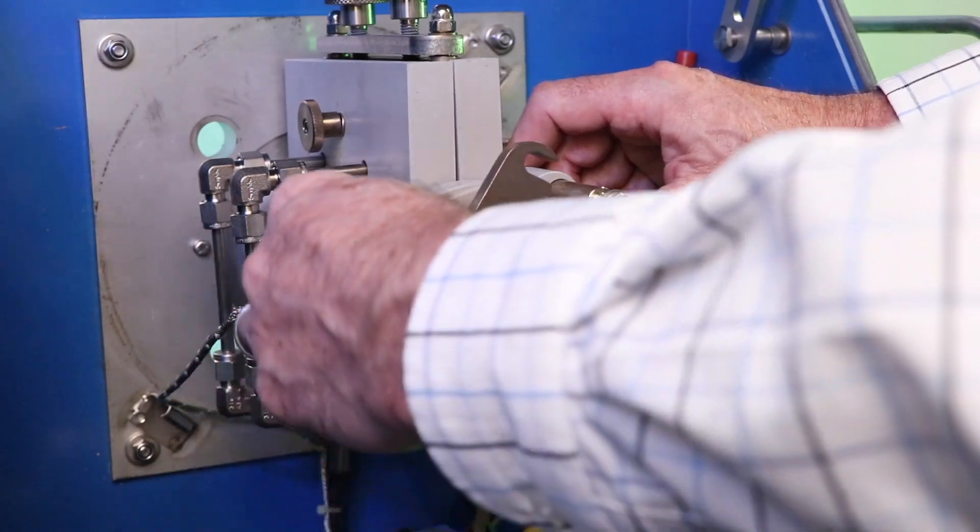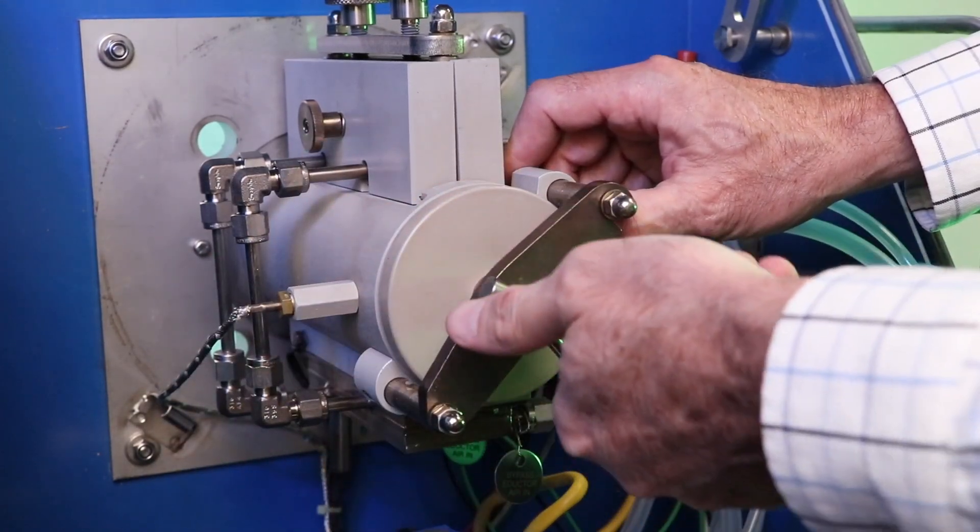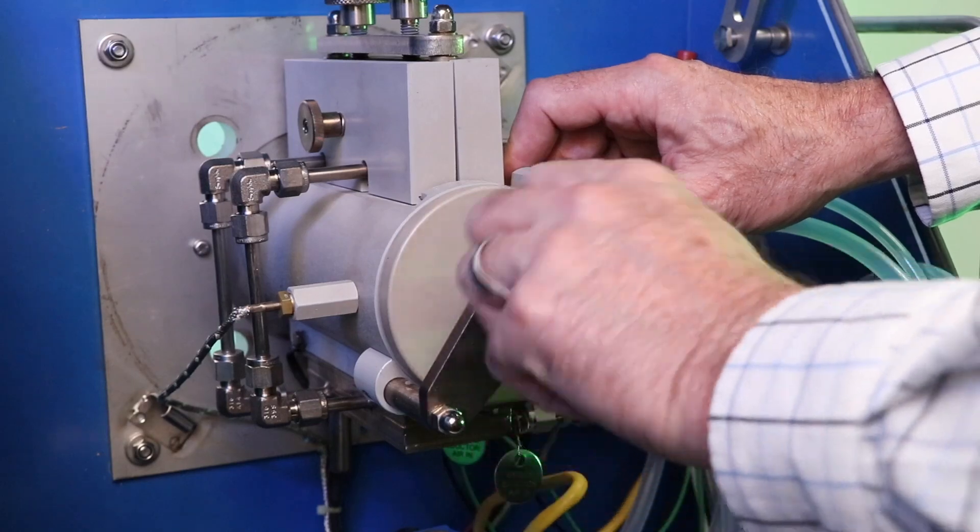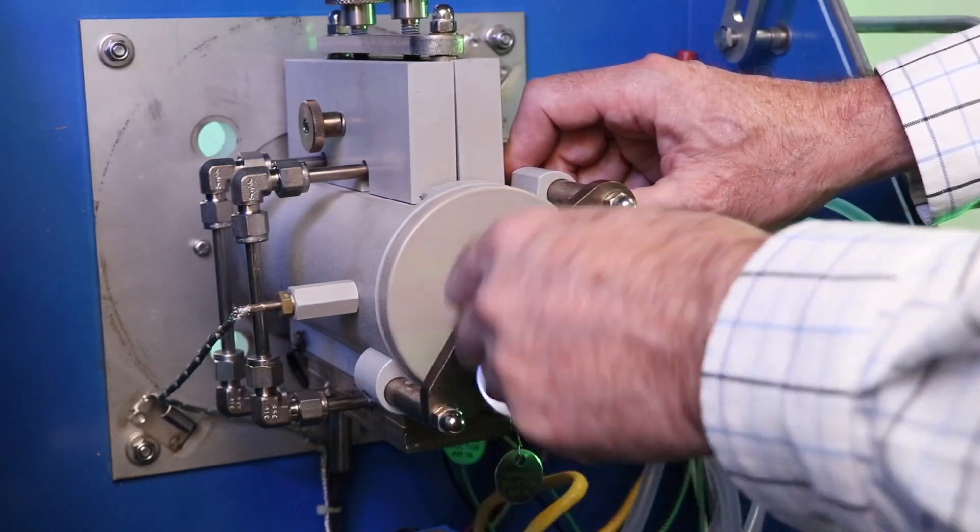Reinstall the housing in reverse order and secure the filter lid. Be sure that the knurled screw and T-handle are only finger tight when reinstalled.